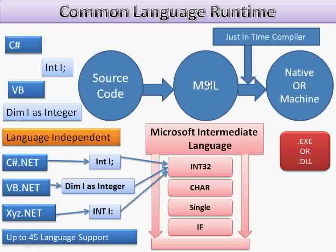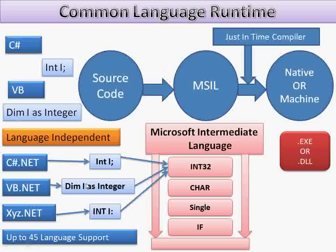After converting into MSIL, with the help of the Just-In-Time (JIT) compiler, the MSIL code is converted into native or machine code. The output format is .exe (executable) or .DLL (Dynamic Link Library). So it's a two-step process: your source code is converted into MSIL, and MSIL is converted into native or machine code with the help of the JIT compiler. The Common Language Runtime means: 'common language' for all languages, and 'runtime' means execution.